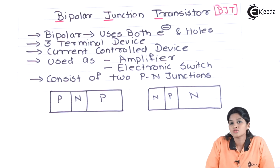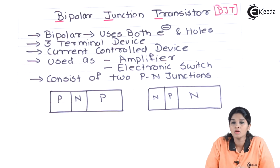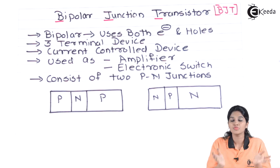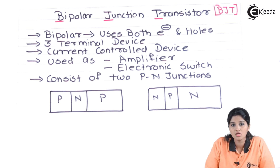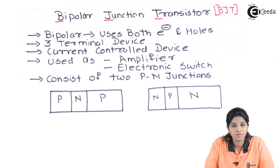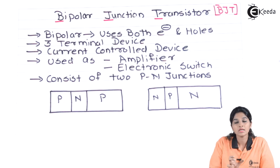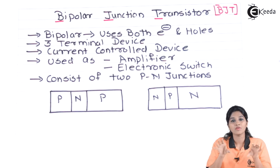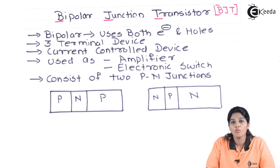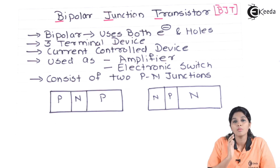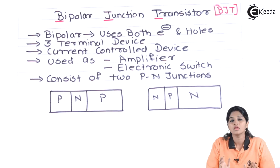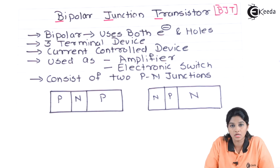Therefore BJT has a number of applications in electronic circuits, and we can say the main building block of all electronic circuits is nothing but the transistor, that is BJT. Now let's move towards the construction of BJT. It consists of two types of semiconducting material, that is P-type and N-type. The construction of BJT is like one semiconducting material is sandwiched between two other types of semiconducting material. Based on the construction, there are two types of BJT: PNP and NPN. In PNP transistor, N-type semiconducting material is sandwiched between two P-type materials, whereas in NPN transistor, P-type semiconducting material is sandwiched between two N-type semiconducting materials.